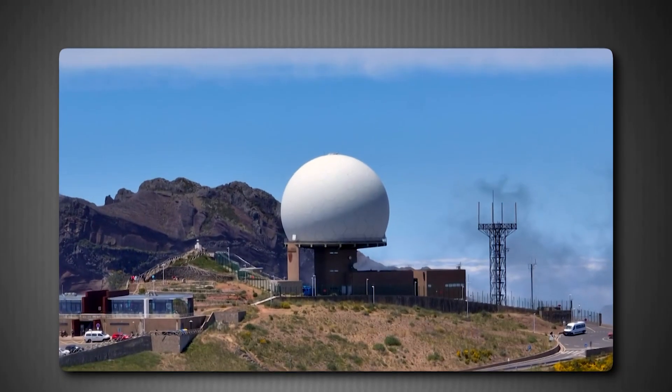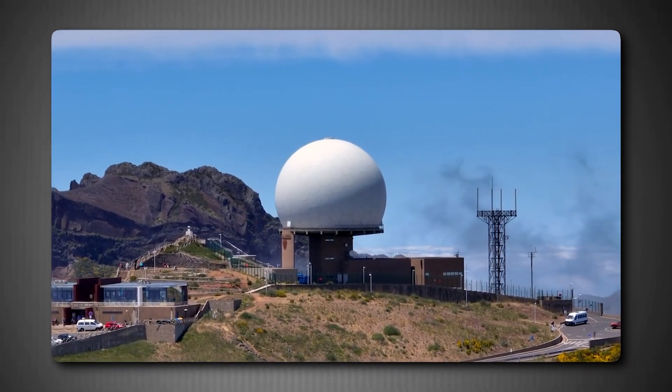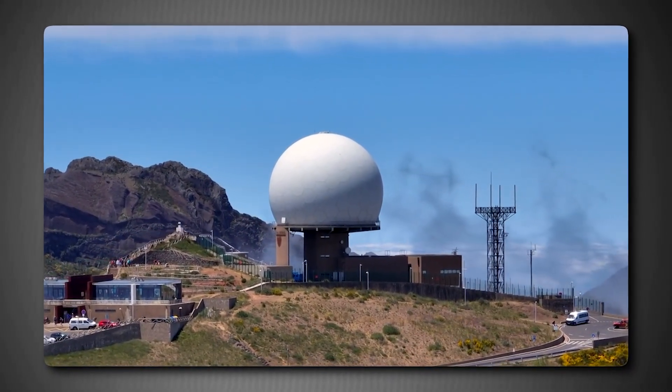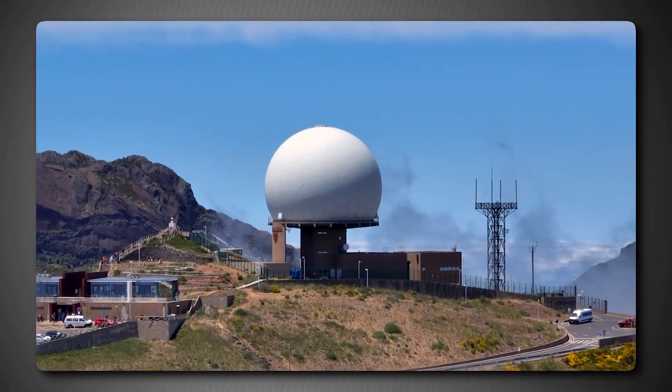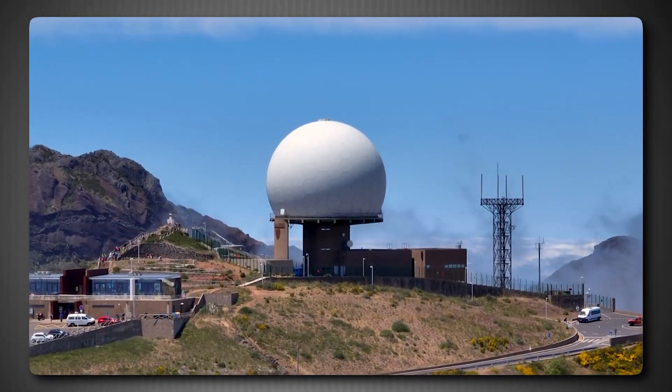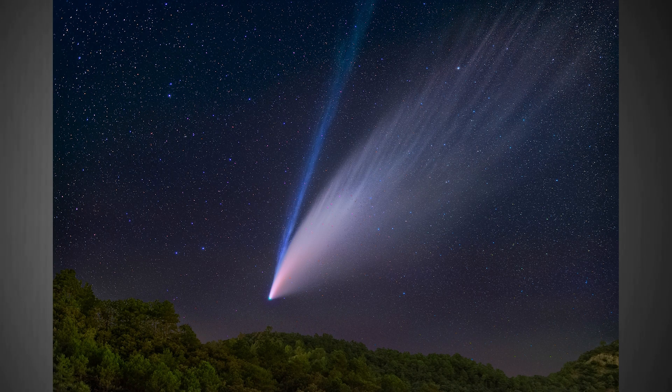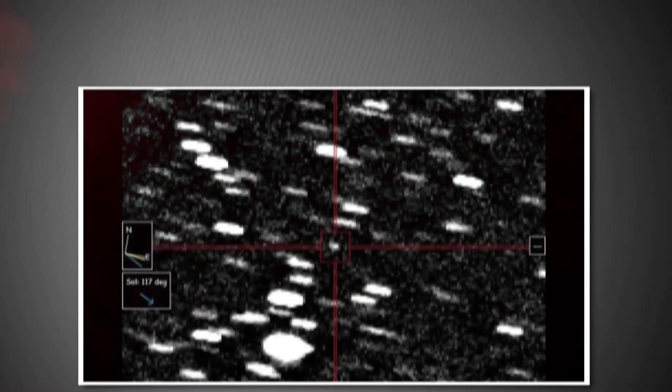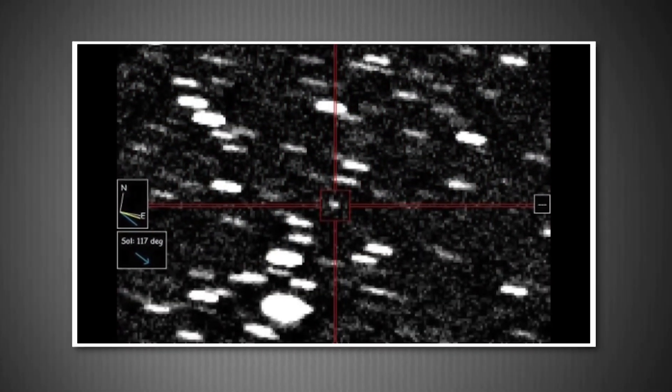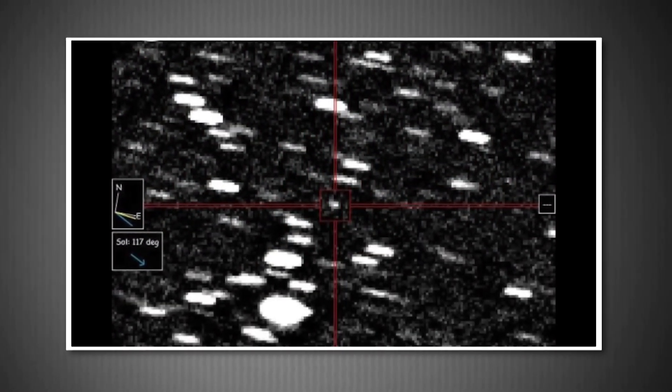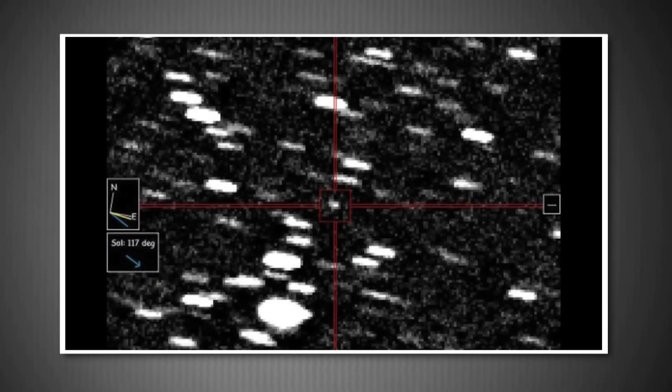By July 2nd, observatories including the Deep Random Survey in Chile, the Lowell Discovery Telescope in Arizona, and the Canada-France-Hawaii Telescope at Mauna Kea all confirmed something crucial. This object had a visible coma, that fuzzy cloud of gas and dust that surrounds active comets, and what looked like a potential tail. This was a comet, not an asteroid, and it was from another star system.